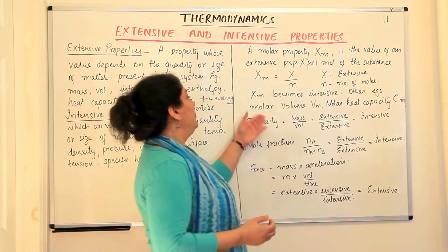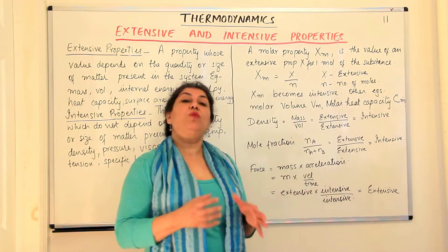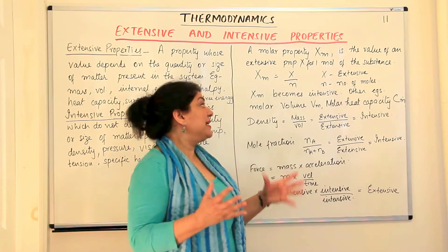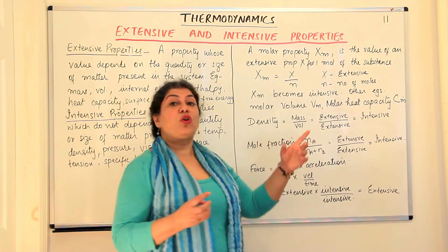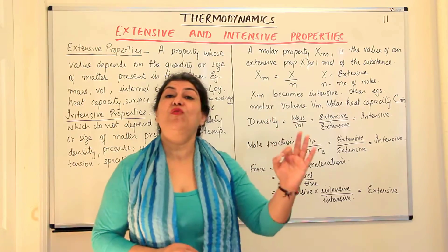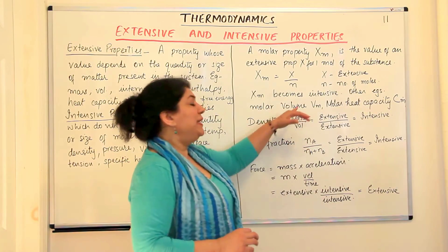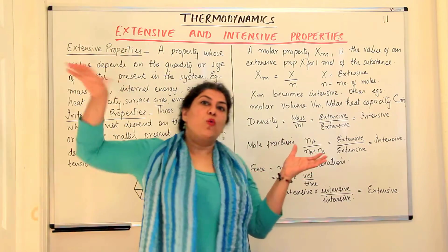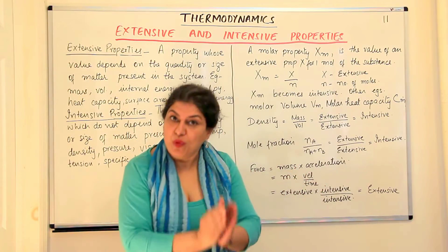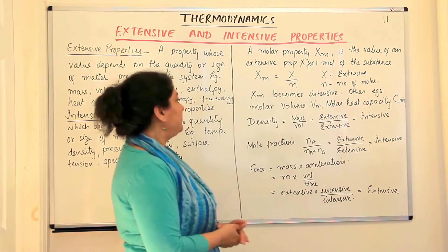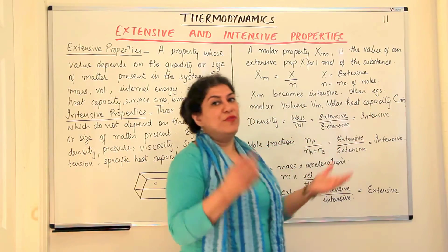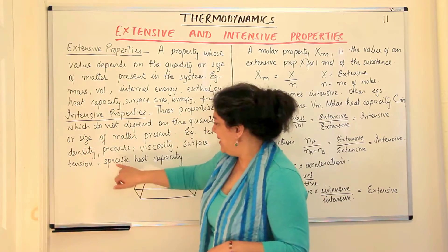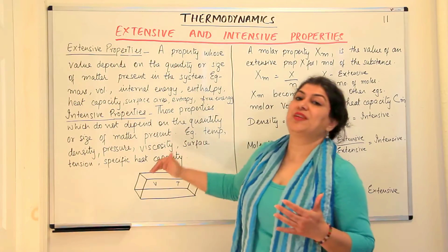Another example is molar volume — the volume of 1 mole. You may recall from states of matter that for an ideal gas under STP, 1 mole of any gas occupies 22.4 liters. So volume was extensive, but when we talk of molar volume, it becomes intensive. Similarly, heat capacity is extensive, but molar heat capacity or specific heat capacity becomes an intensive property.